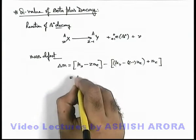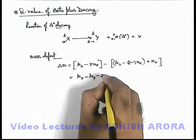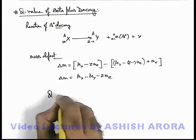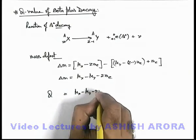So on simplifying the calculation this'll be M_X minus M_Y minus twice of M_e. This is the mass defect of the reaction, so here Q value can be directly given as M_X minus M_Y minus 2 M_e.